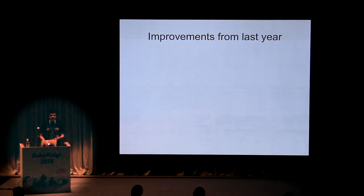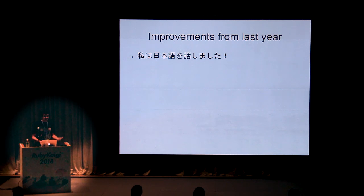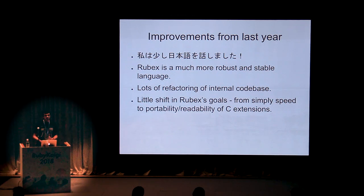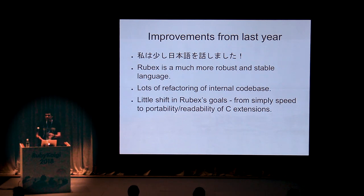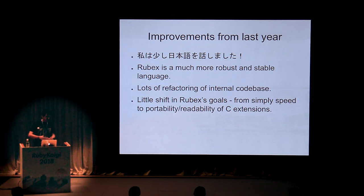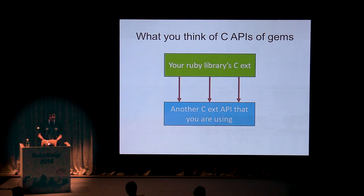In this talk, I will introduce you to some major improvements made to Rubex from last year's talk. I will be introducing a much more stable and robust language, and there's been a lot of refactoring of the internal codebase. There's also been a shift from Rubex's initial goals. Until last year, I thought Rubex would be a great way to speed up Ruby and make writing Ruby extensions easier. But now it turns out that an even greater need is to have public C APIs that are accessible and readable through documentation, without having to dive into the C code of a Ruby extension in order to use it in another gem.